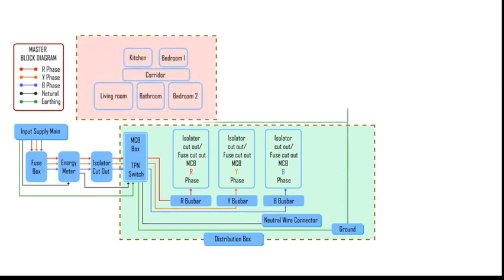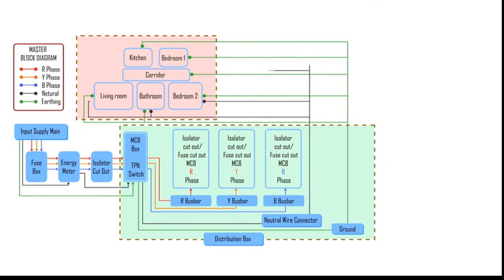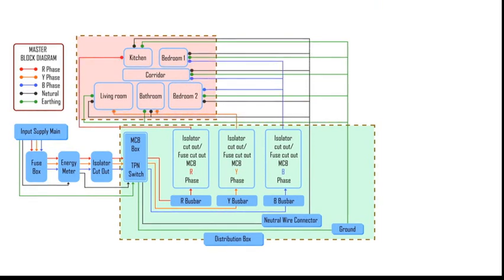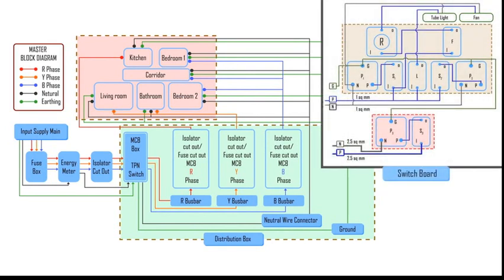Next, we have to pull out the wires from the distribution box to each room in the house. Once this is done, we will do the internal wiring of the rooms, which means we will add switchboards and plug points. All this is nothing but wiring of the switchboard and the junction box. Finally, we will install basic appliances such as ceiling fans and tube lights. So friends, this is our master block diagram, the plan for wiring our house.